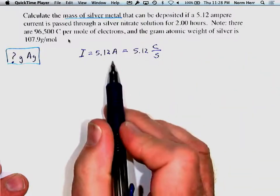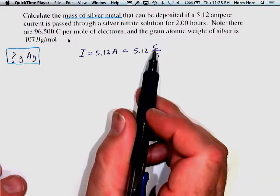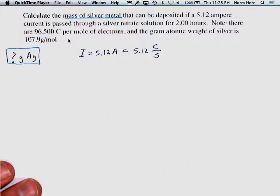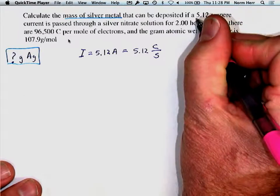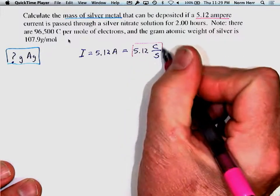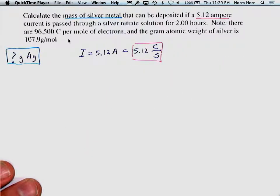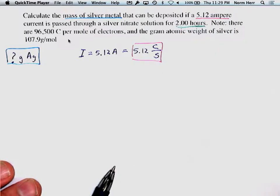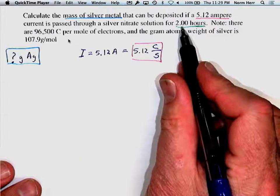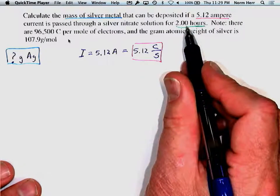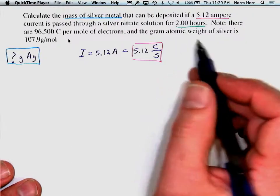We're expressing it in more fundamental terms to make cancellations easier later. The key thing is that we have a known factor of 5.12 amps. We also know the time, which is 2.00 hours. The .00 indicates significant digits — it's not just 2, it's 2.00 hours, and we know that to that level of precision.